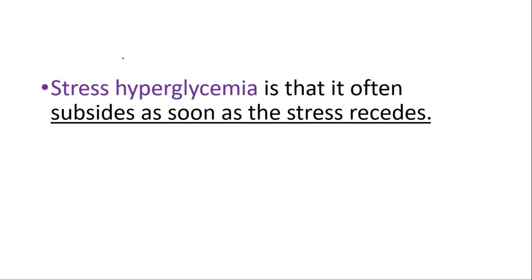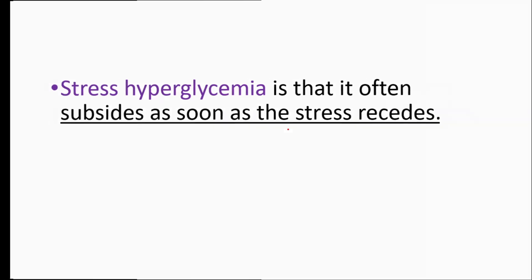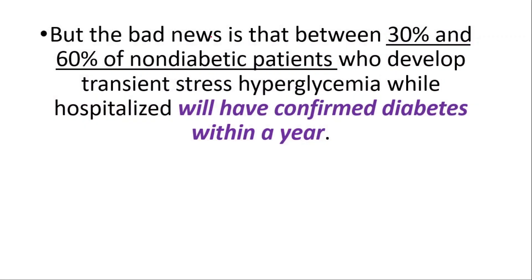The good news is stress hyperglycemia often subsides as soon as the stress recedes. The bad news is that between 30 and 60 percent of non-diabetic patients who develop transient stress hyperglycemia while hospitalized will have confirmed diabetes within a year.